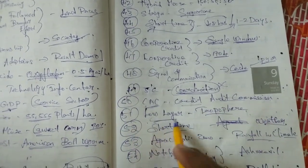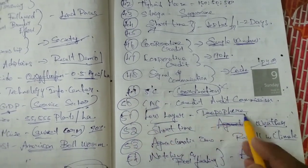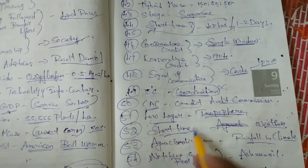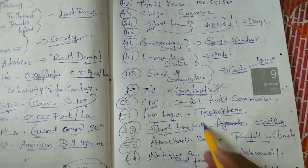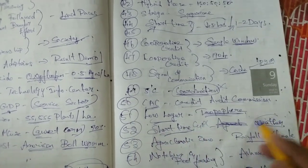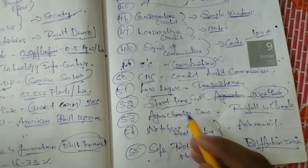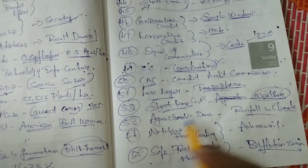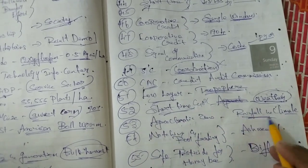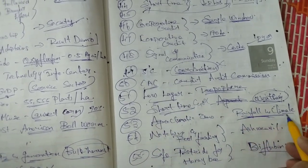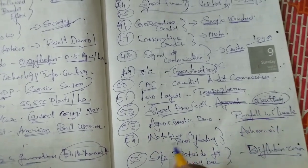That's the low layer — low layer is troposphere. That's the short-time place. That's the weather. That's the agro-climatic zone. Rainfall and climate.